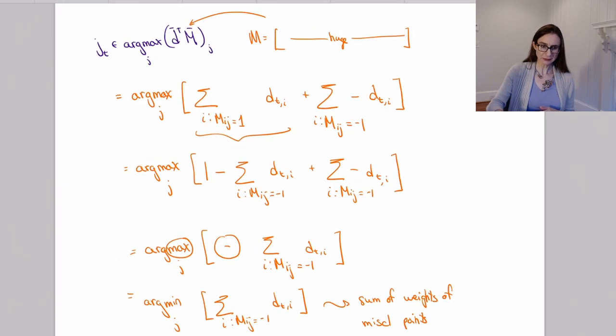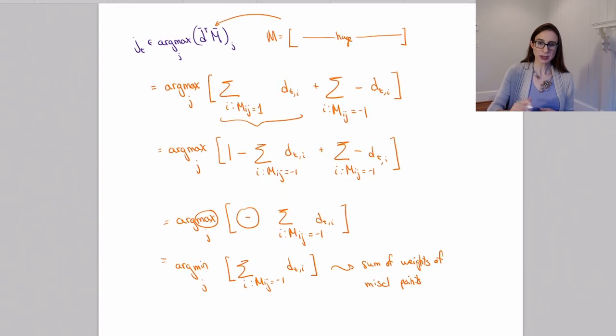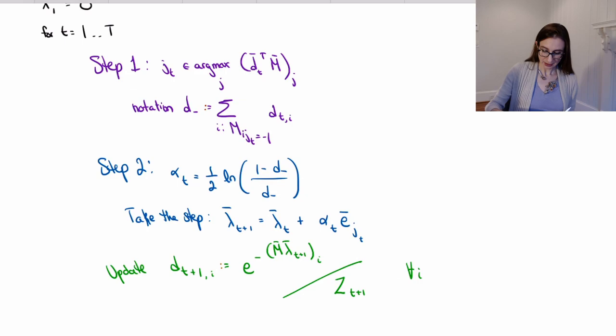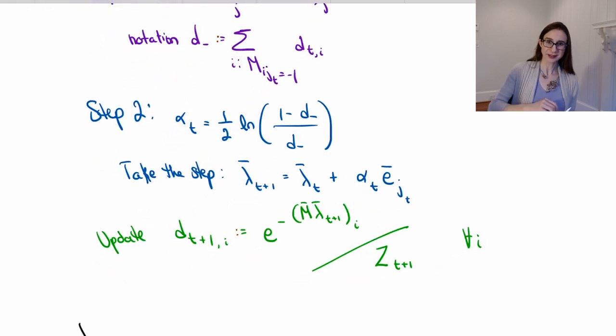And in reality, when you run the weak learning algorithm, it may not exactly minimize the sum of weights. Like if you're using CART as the weak learning algorithm, but still, it's still approximately minimizing the sum of the weights of the misclassified points. And so this expression really does represent what the weak learning algorithm is trying to do. Okay, so in the next video, I'm going to explain why this weight update step is what it is.